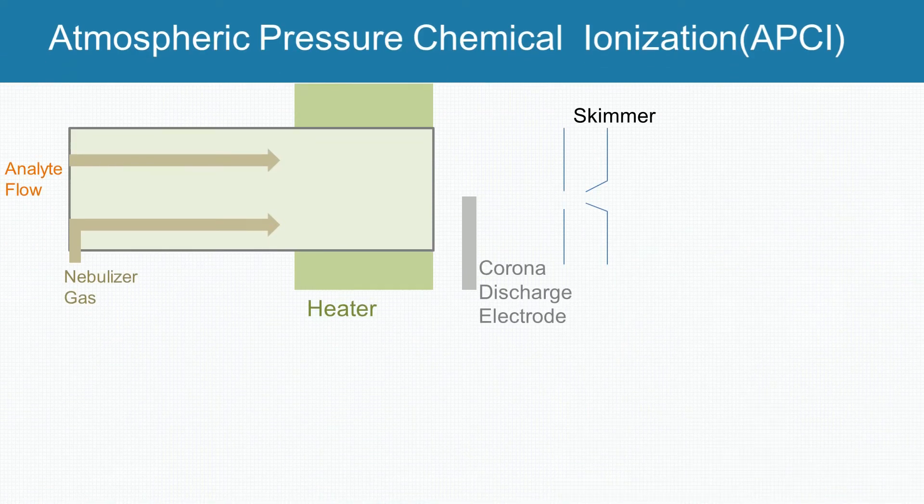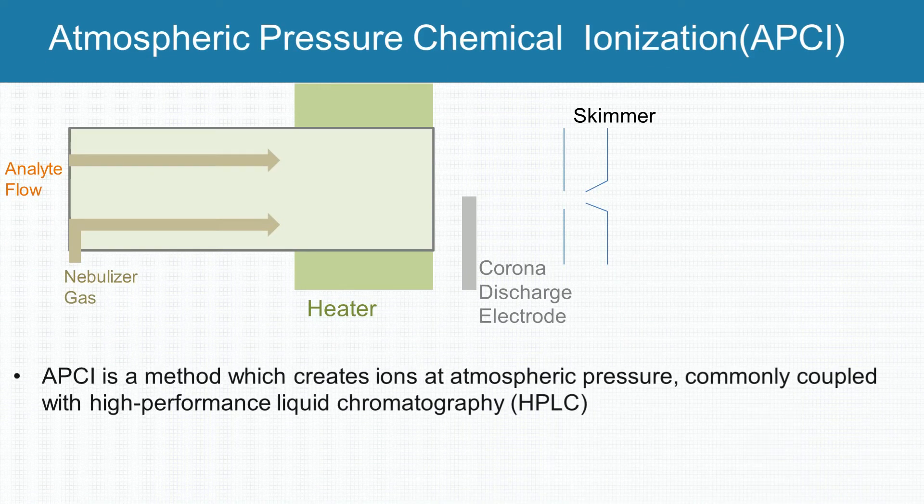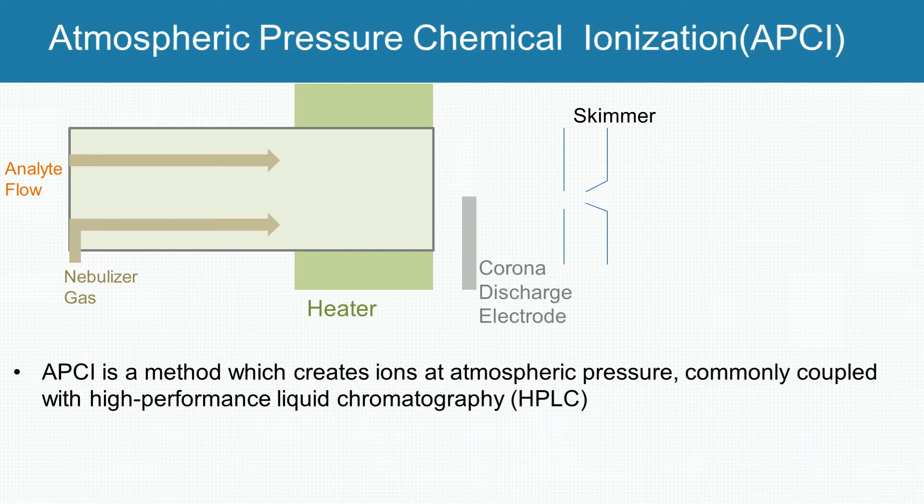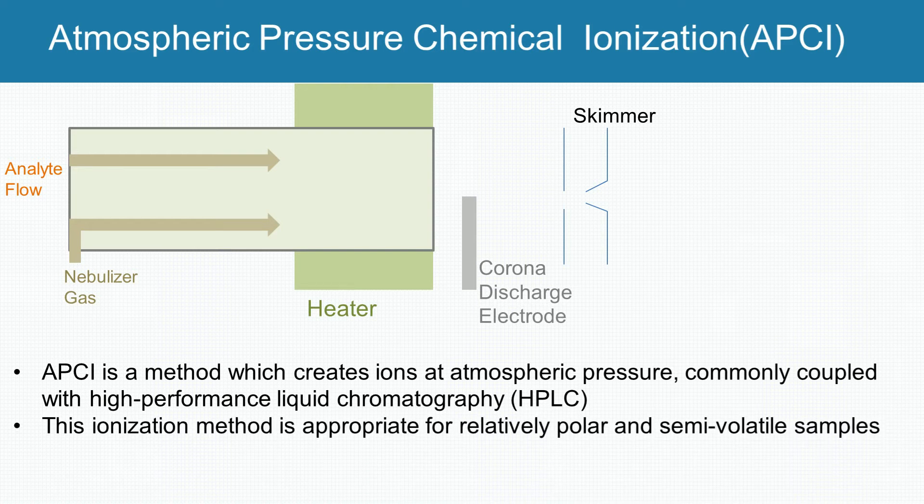Atmospheric pressure chemical ionization is a method which creates ions at atmospheric pressure, commonly coupled with high-performance liquid chromatography. And this method is appropriate for relatively polar and semi-volatile samples.